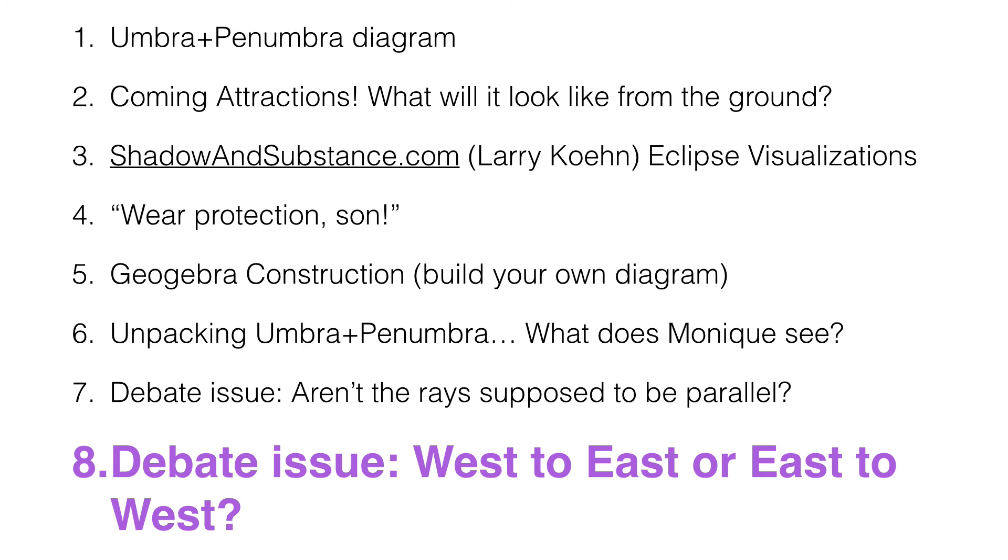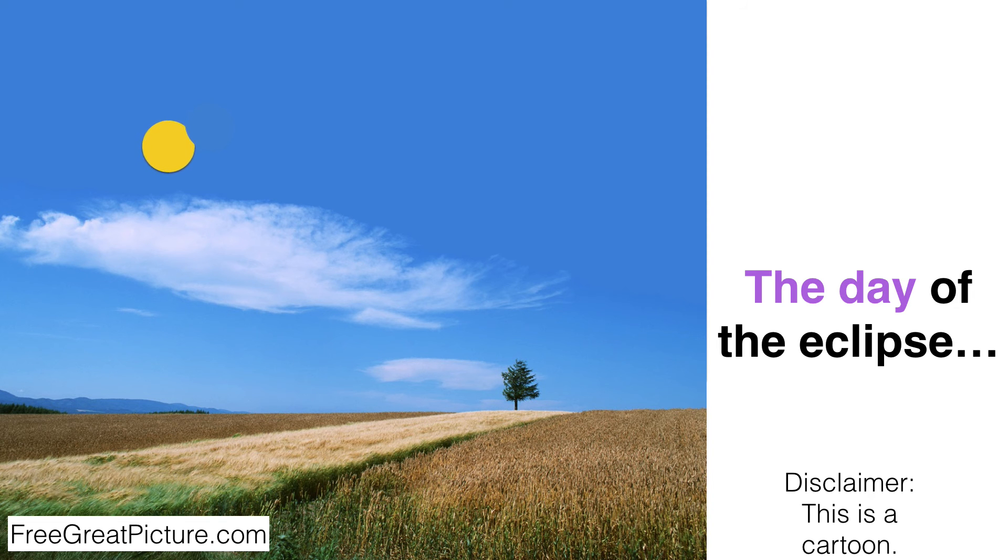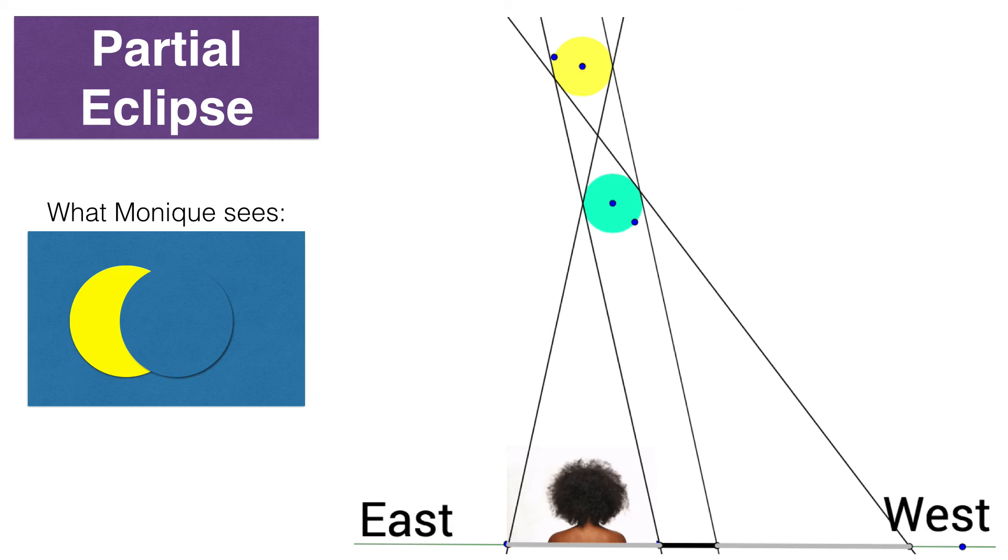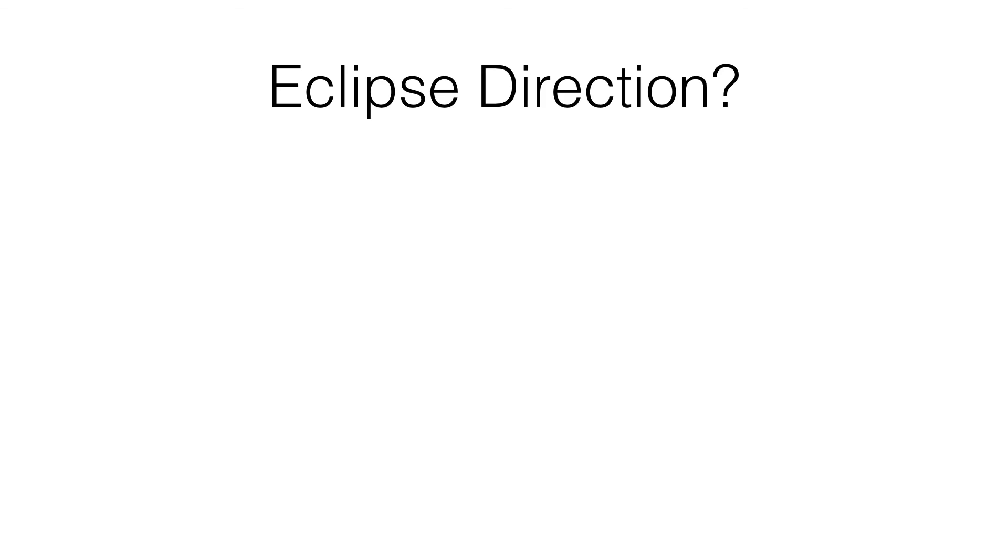The next debate issue is, is the shadow going to move west to east or east to west? So let's revisit this eclipse animation. Again, the sun is overtaking the moon. The moon first obscures the sun from the right. And this is what Monique sees before she's hit the totality. She's in the path of totality, so it is coming. And what does she see when she looks up? She sees the left side of the sun, and then the right side of the sun is being obscured by the moon.